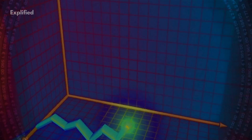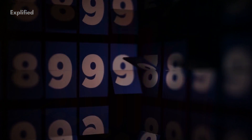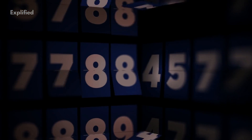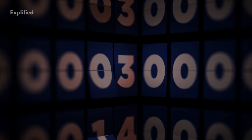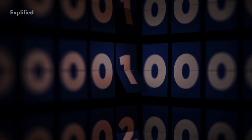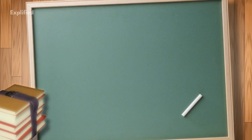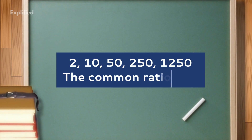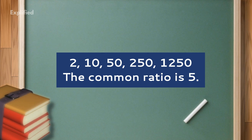Thomas Malthus theorized that populations grew in geometric progression. A geometric progression is a sequence of numbers where each term after the first is found by multiplying the previous one by a fixed non-zero number called the common ratio. For example, in the sequence 2, 10, 50, 250, 1250, the common ratio is 5.